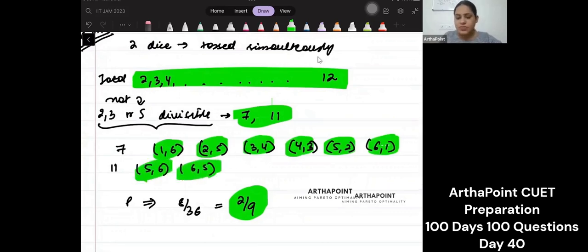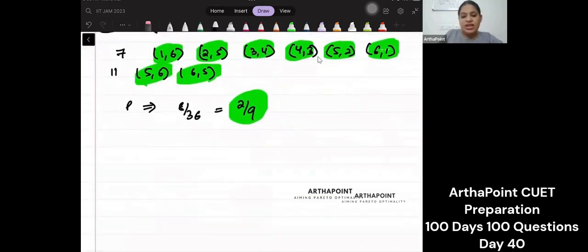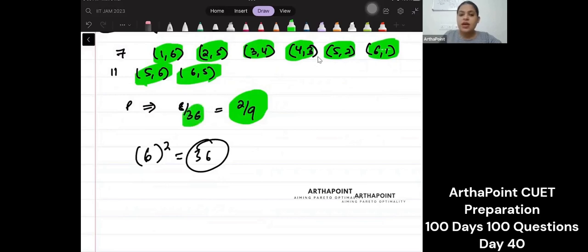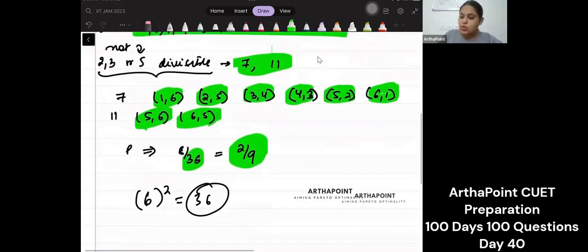When you toss a dice, how many total outcomes do you have? 36, because each dice can give you 6, so 6² = 36. You have 36 options.